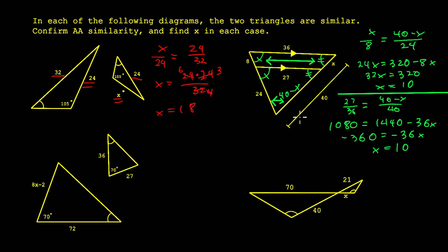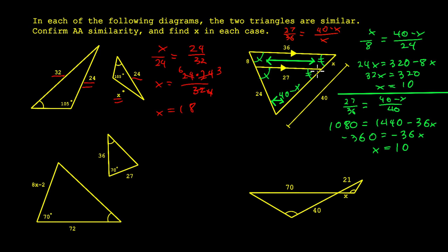One important caveat: something people sometimes do incorrectly is set up 27 over 36 equals 40 minus X over X — using a full side on the left and a partial piece on the right. That is comparing a side over a side to a side over a piece, and that does not work.